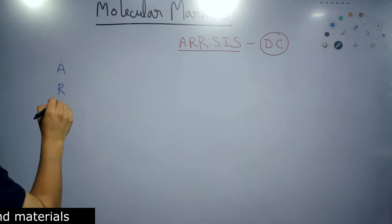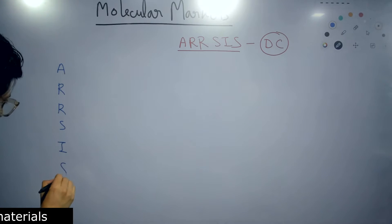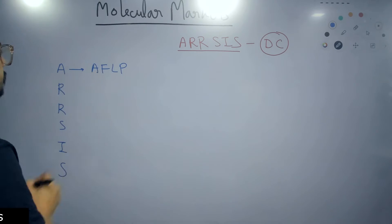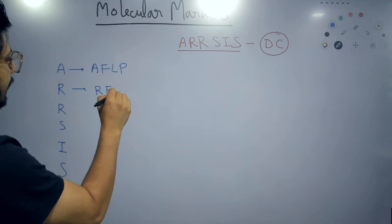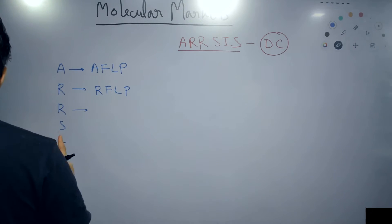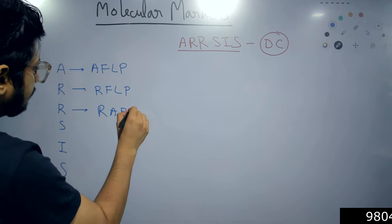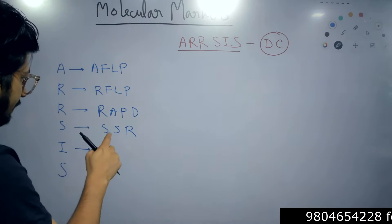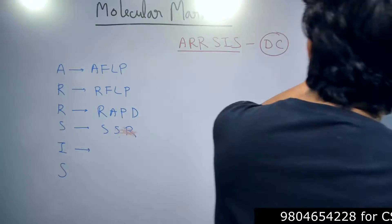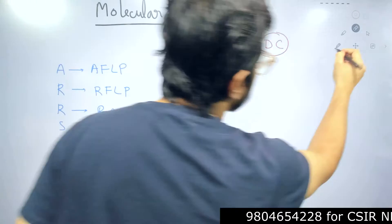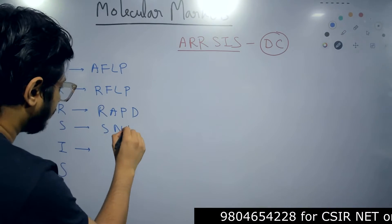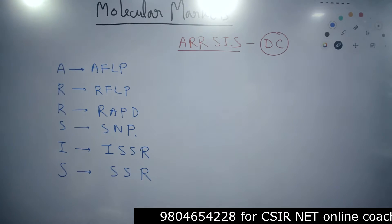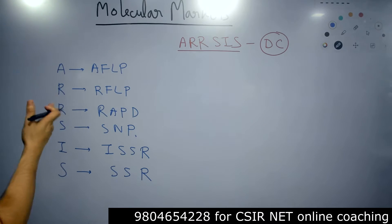So starting with A, we have R, we have R, then we have S, we have I, we have S — giving us A-R-R-S-I-S. The A stands for AFLP, the first R stands for RFLP, the second R stands for RAPD, the S stands for SNP, the I stands for ISSR, and the last S is for SSR.